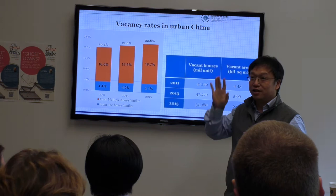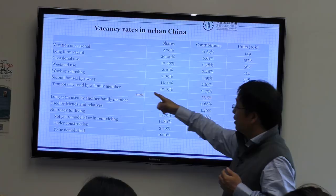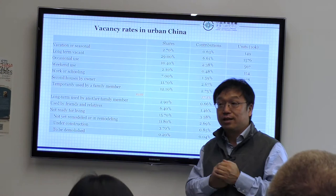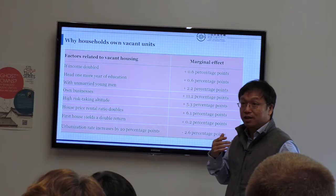The big number is 54 million units — 6 billion square meters. These are houses that are not used, essentially vacant. The second-house-by-owner category is the most controversial one; in most countries these would be counted as vacant.